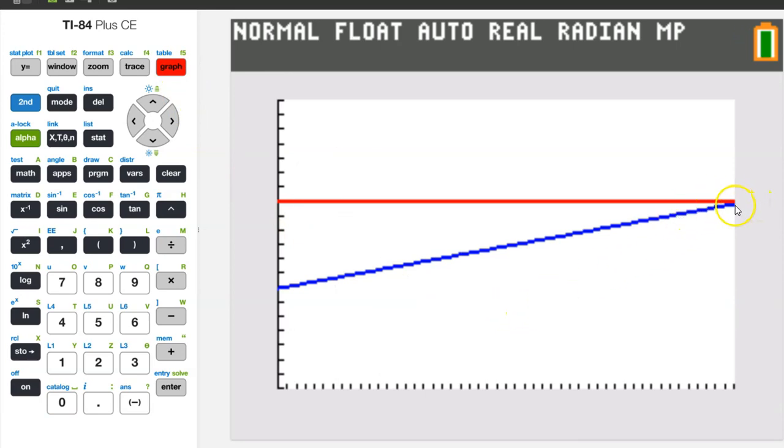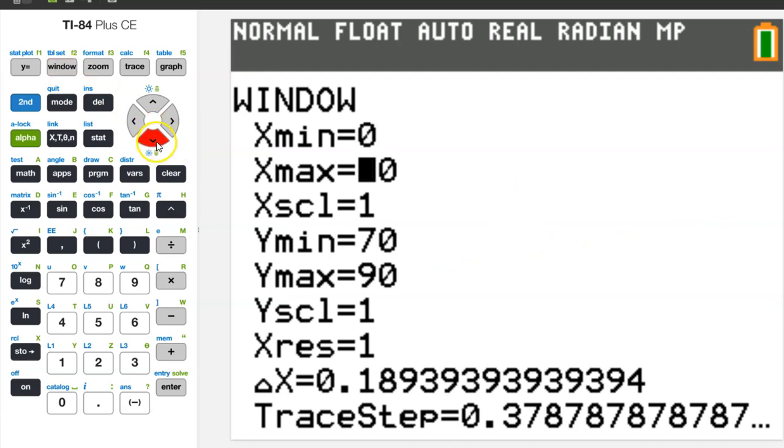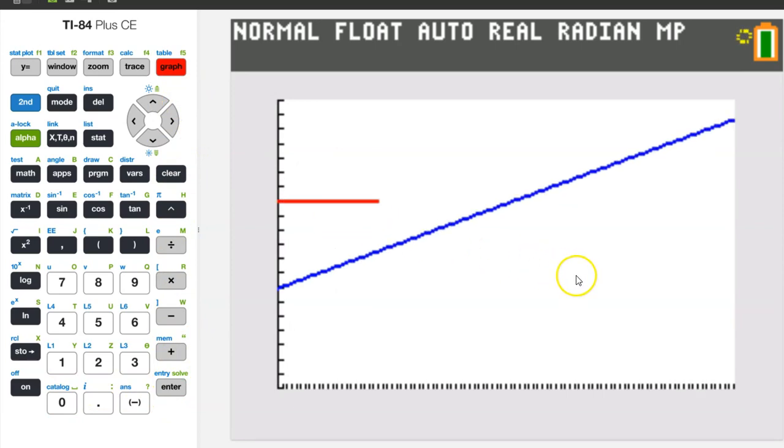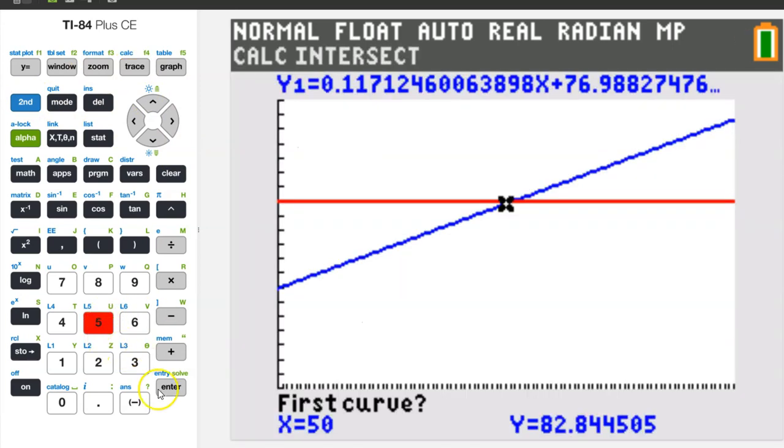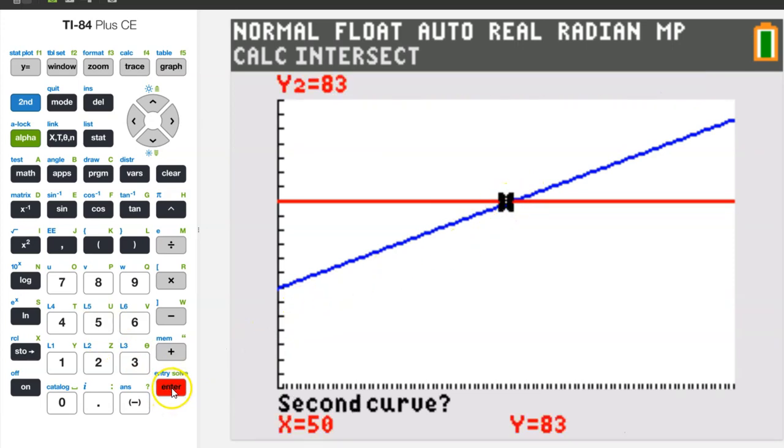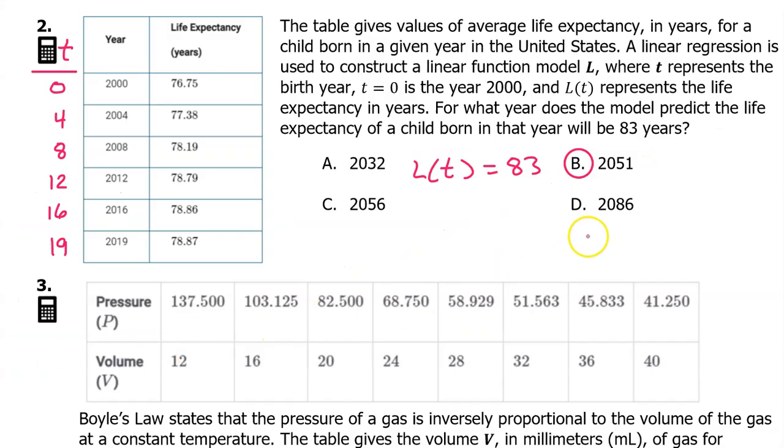Almost. We need to go a little bit further. So, let's change the Xmax to go further to the right. So, let's go back and I'm going to go with 100. So, now we can clearly see the intersection. We can find this intersection point by hitting second, trace, intersect, and just make sure your pointer is close to the point of intersection, and hit enter three times. So, this is the number that will have to be translated into a year. Since 51 corresponds to the year 2051, the answer is B.